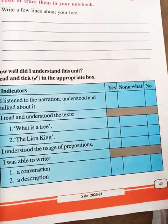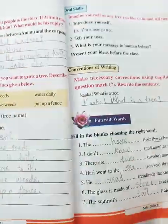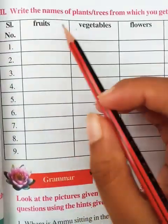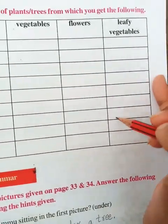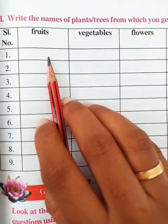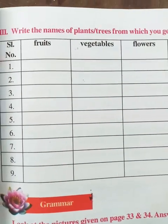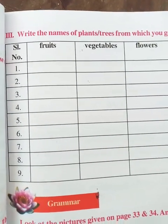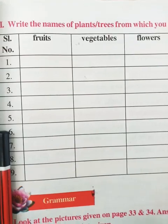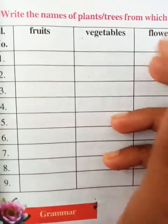I think we missed page number 37. Open page number 37. I already asked you to write the names of fruits, vegetables, flowers, and leafy vegetables. Did you finish it? I said to write at least five. I'll tell you now to finish it. Open page number 37 and write the names of plants and trees from which you get the following.